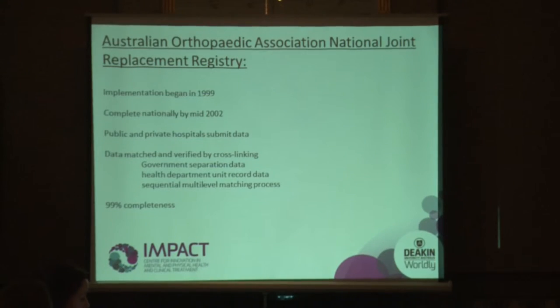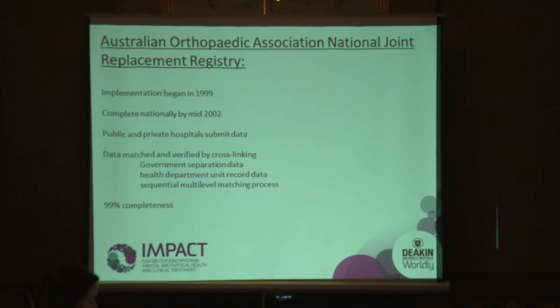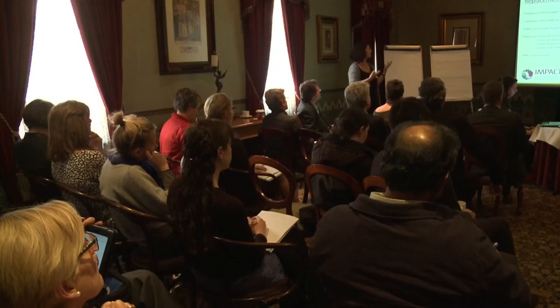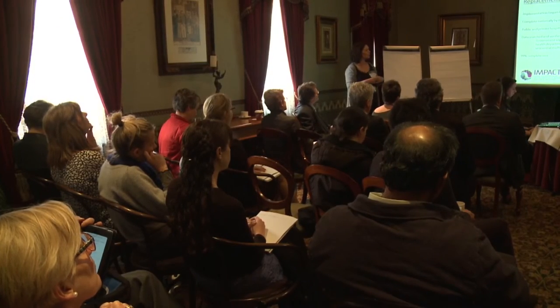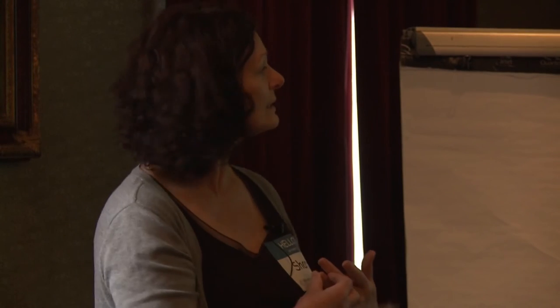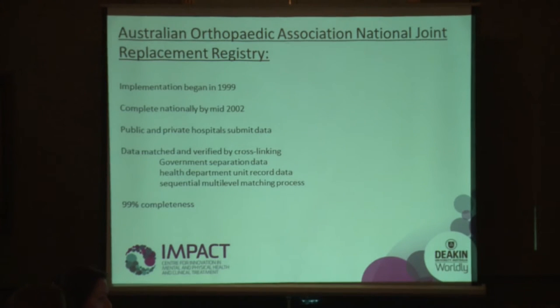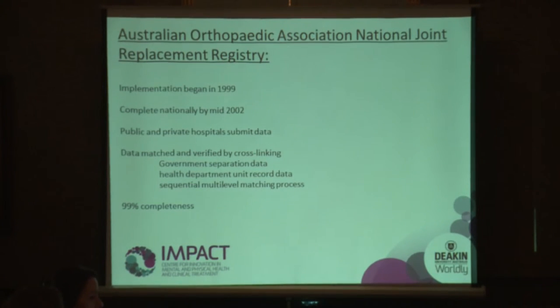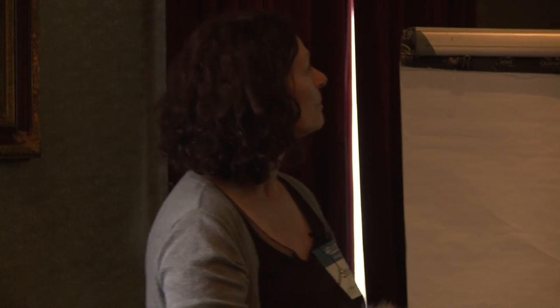The final dataset is a national registry, set up for public and private hospitals across Australia to capture information about joint replacements — starting with knee and hip, then expanding to shoulder and other joints. It's a very strong registry with 99% completeness, cross-referenced with government separation data and health department unit records using complex matching.